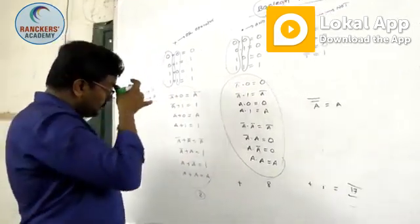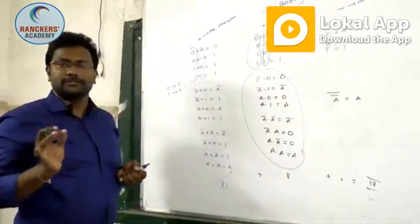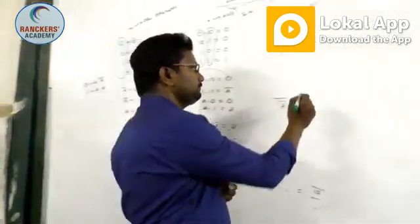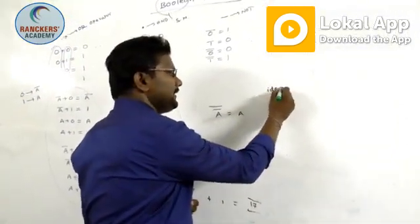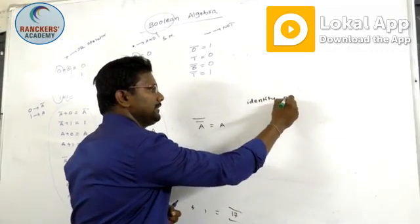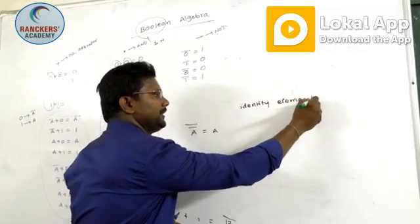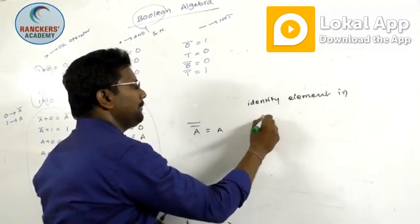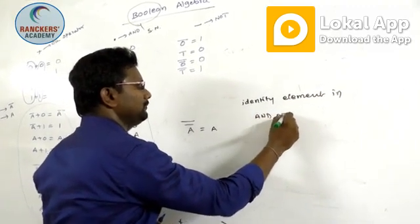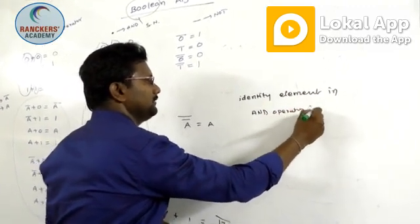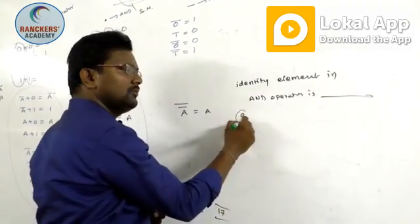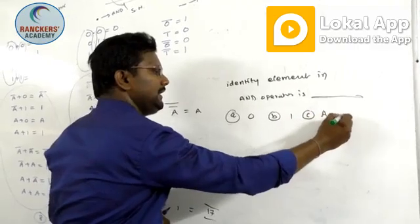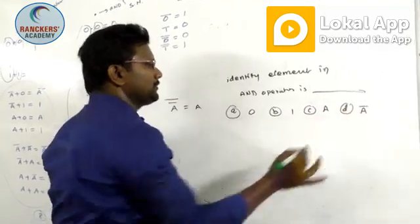Let's take a simple and important question: what is the identity element in the AND operator? The options are: A — zero, B — one, C — A, D — A bar.